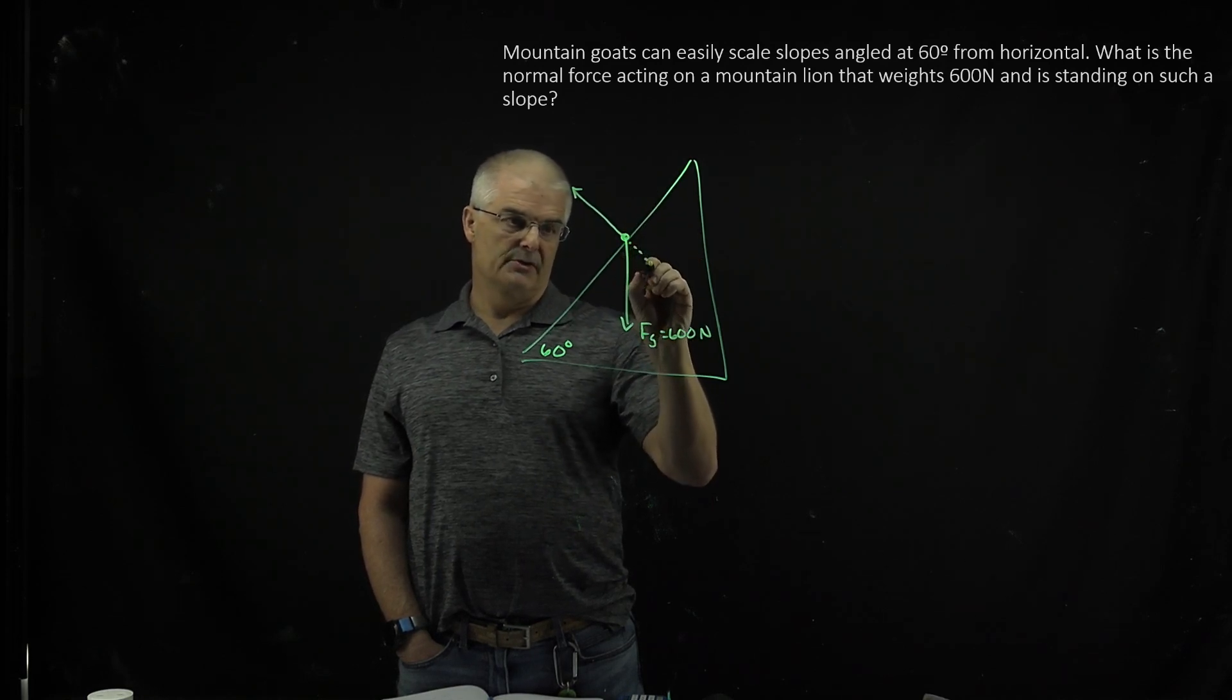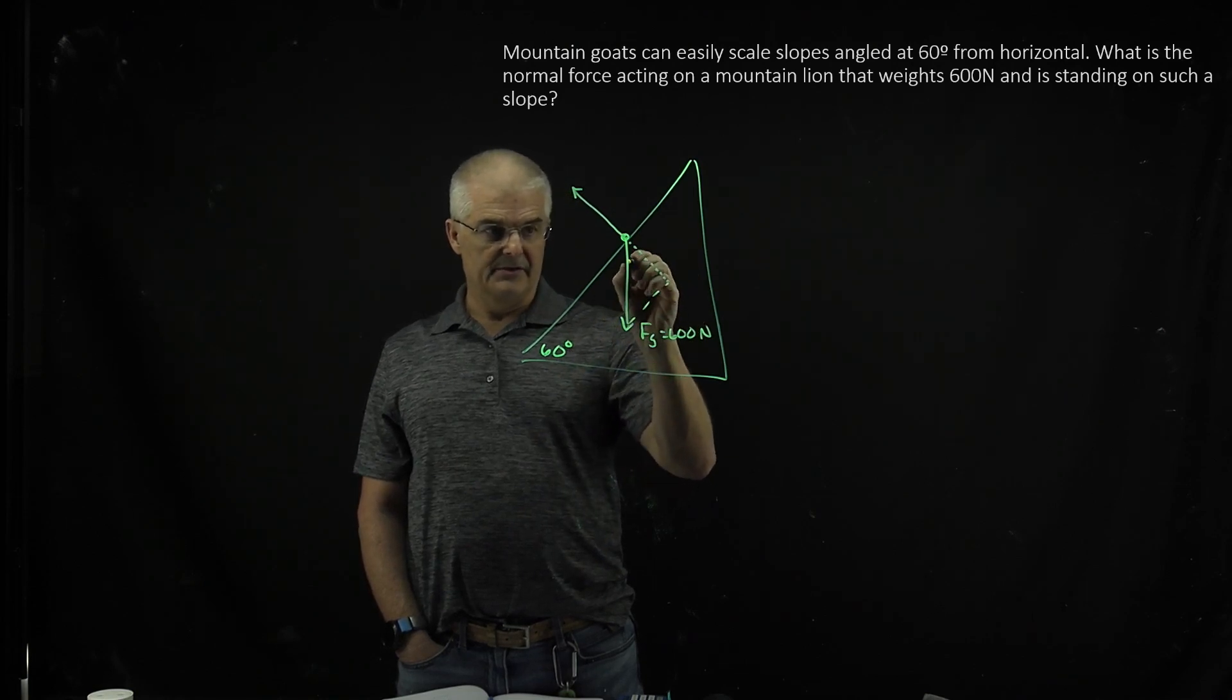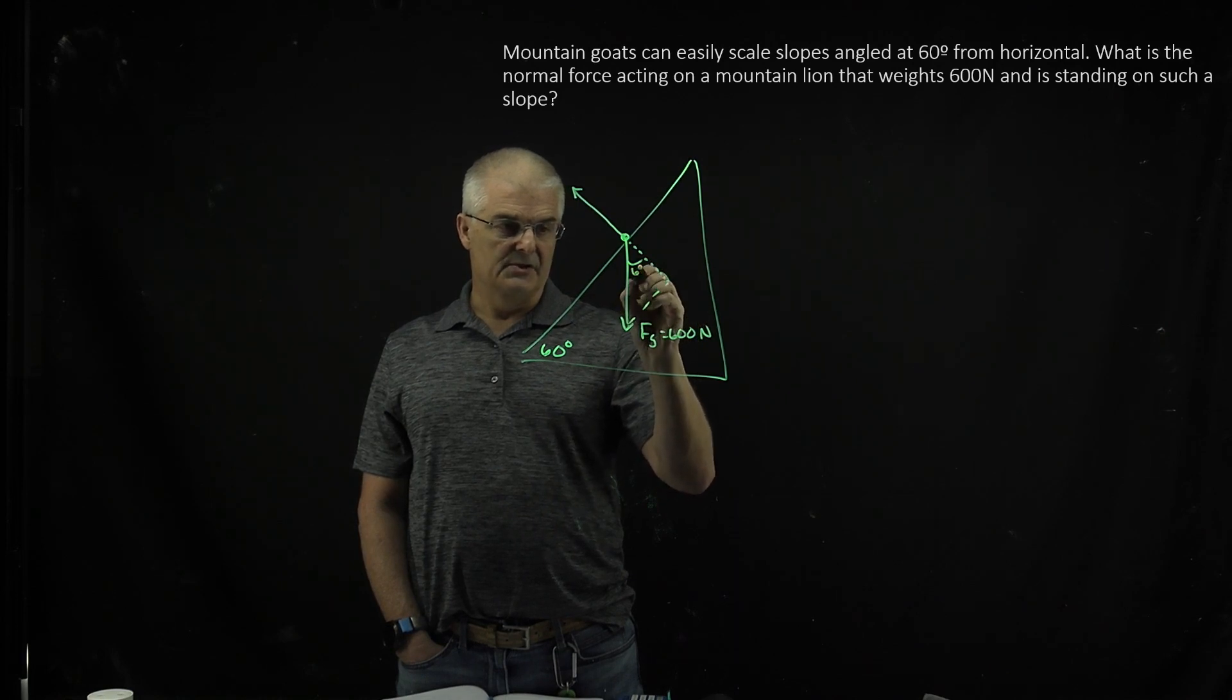And so what we do is we draw a triangle. Now, these are like triangles, so this triangle and this little baby triangle are the same, or at least they're the same in terms of their angles. So this is 60 degrees.